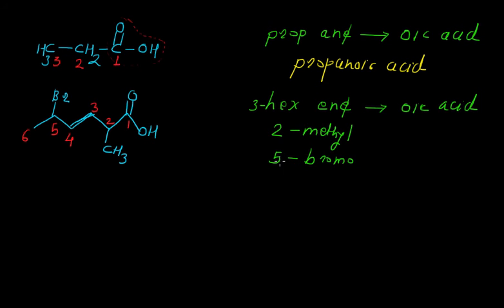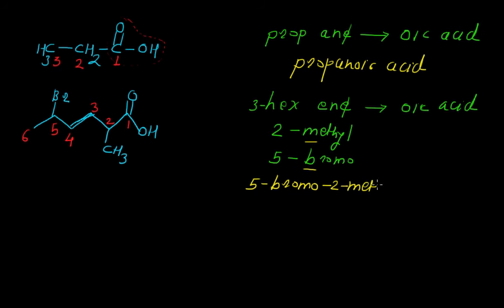Between the two substituents, 'bromo' comes first in alphabetical order compared to 'methyl'. So we write '5-bromo' first, then '2-methyl', giving the full IUPAC name: 5-bromo-2-methyl-3-hexenoic acid.